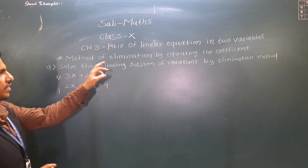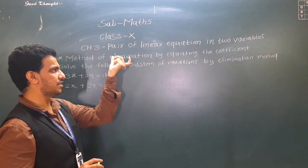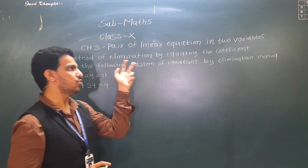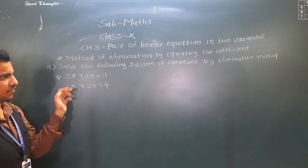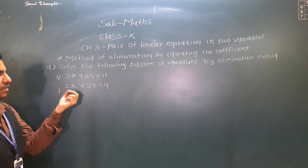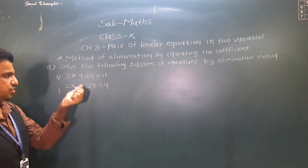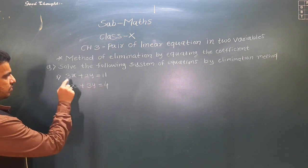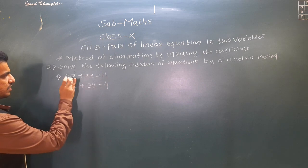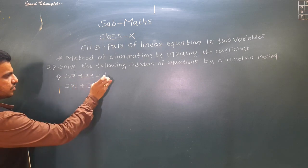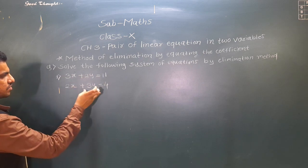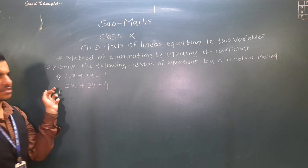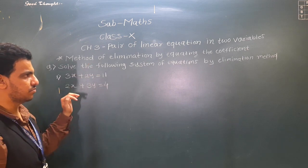In this method we have to eliminate one of the variables by equating the coefficients. The first equation is 3x + 2y = 11, and the second equation is 2x + 3y = 4. So we have to solve this system of equations by the elimination method.